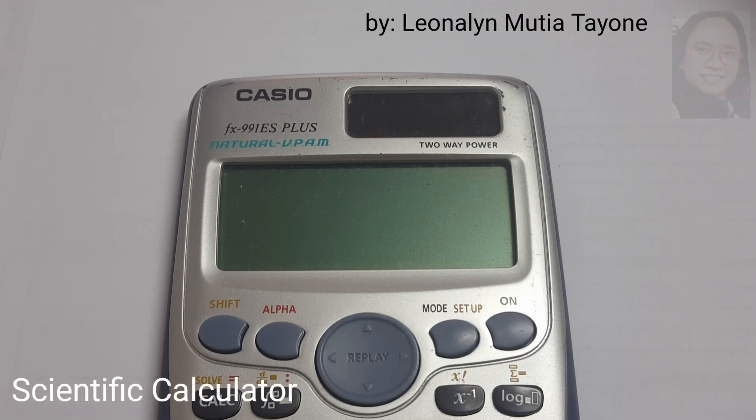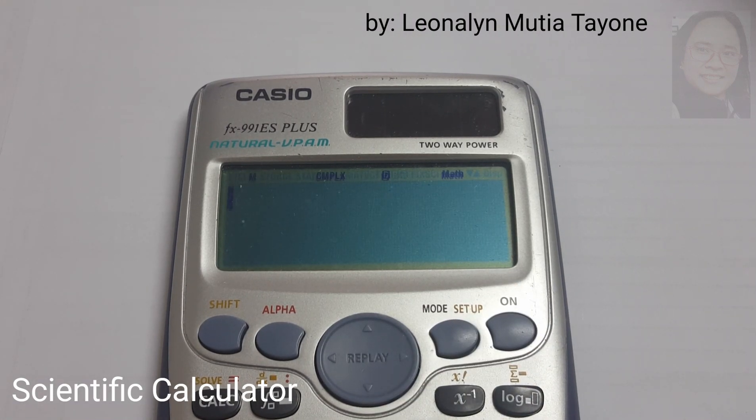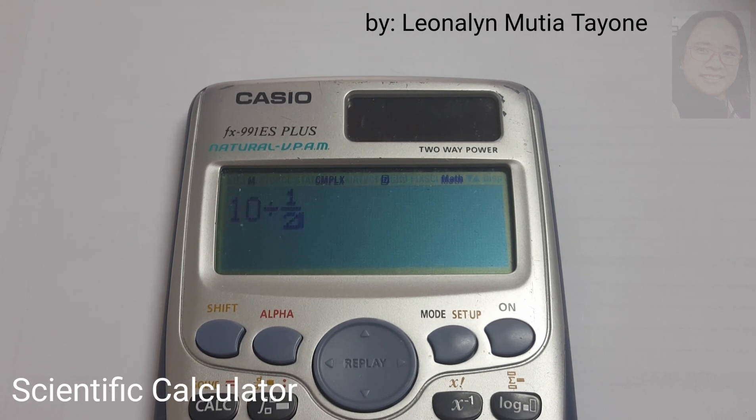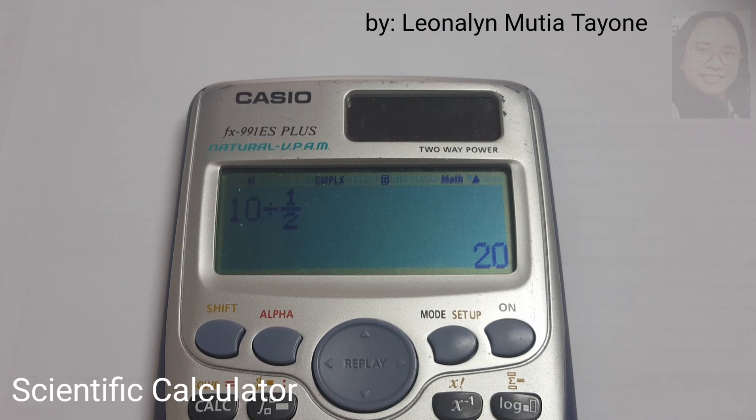I-double check muna natin sya using scientific calculator. One half. Okay? Divided by one half. One half. And that is equals to 1. Next. 10. Bali, 10. Divided by one half. And that is equals to 20.